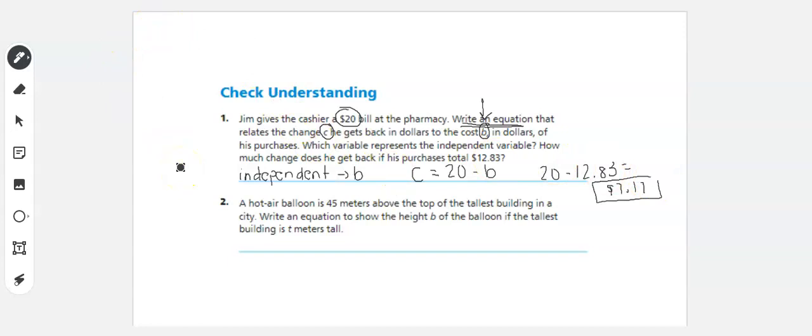Then let's look at number two. A hot air balloon is 45 meters above the top of the tallest building in the city. So I know I'm going to use 45. We're going to write an equation to show the height, B, of the balloon if the tallest building is T meters.